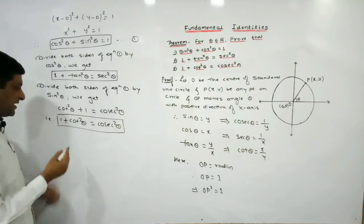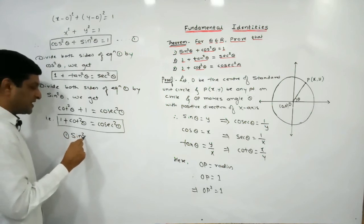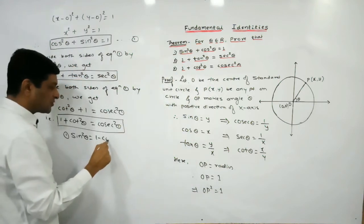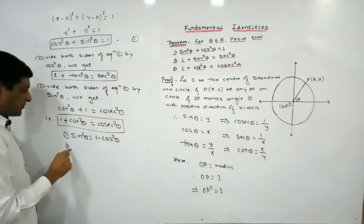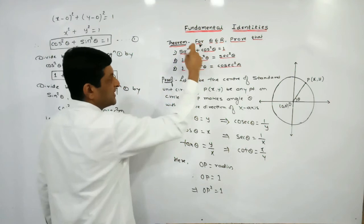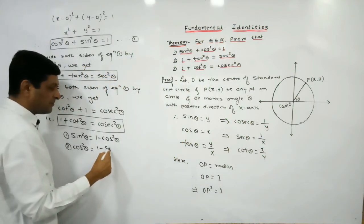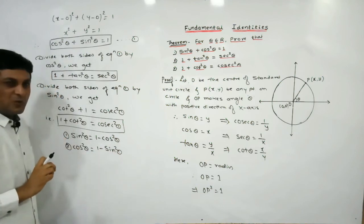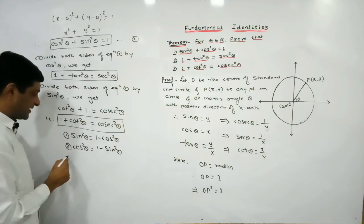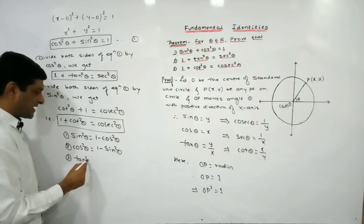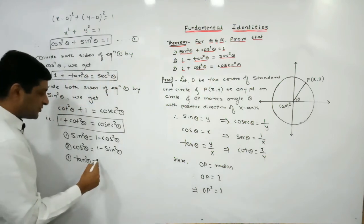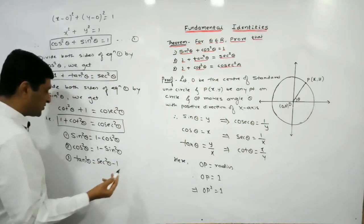Now let us simplify these identities to find important derived results. From the first identity, sin squared theta equals 1 minus cos squared theta, and cos squared theta equals 1 minus sin squared theta. From the second identity, tan squared theta equals sec squared theta minus 1.